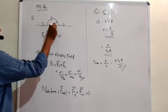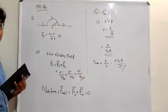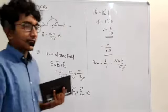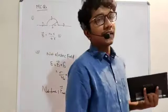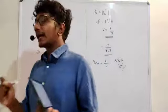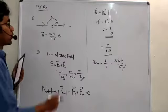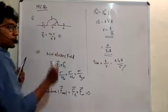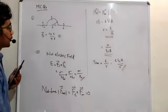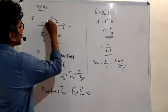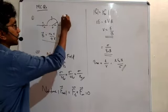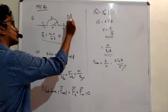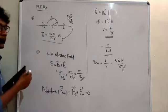The two straight conductors will not produce any magnetic field at the center O, because the center lies on their axis — a current-carrying conductor does not produce any magnetic field along its own axis, so that contribution is zero. For the semicircular part, the magnetic field at the center of a full circle is μ₀I divided by 2R, so for a half circle it is μ₀I divided by 4R.